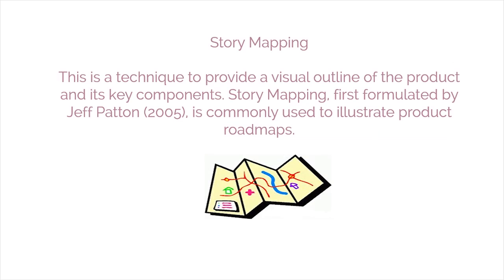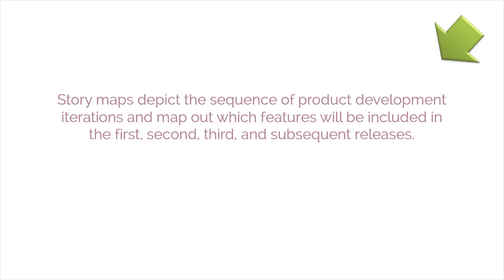The fourth method to plan for delivering value is story mapping. This is a technique to provide a visual outline of the product and its key components. Story mapping, first formulated by Jeff Patton in 2005, is commonly used to illustrate product roadmaps. Story maps depict the sequence of product development iterations and map out which features will be included in the first, second, third, and subsequent releases.